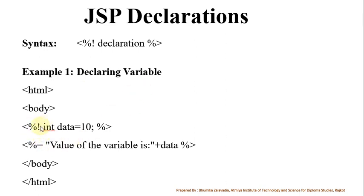Here in the declaration tag, I am declaring one variable 'data' with the data type integer and value 10. In this line, I am printing the value of this variable. In the first line, I am declaring it and then here I am accessing it using this expression tag. Instead of equal to, you can also write out.print or out.println. This is how you are declaring the variable using the declaration tag.